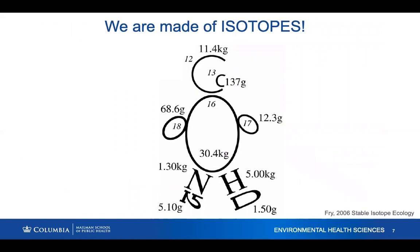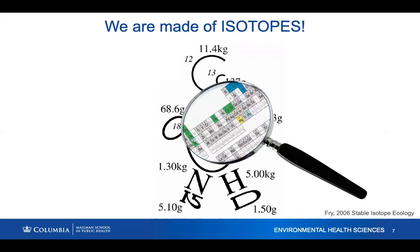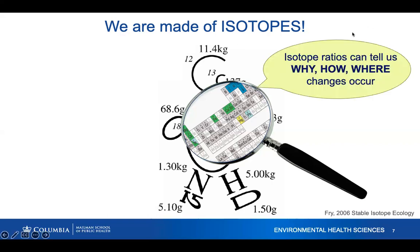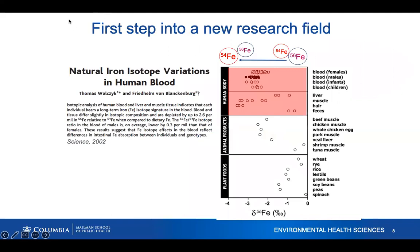Every object is defined by its elemental and isotopic composition — whether it's a rock, water, or a human. We are made of isotopes of the major elements: carbon, oxygen, nitrogen, sulfur, hydrogen. To a smaller extent we also contain all other elements — essential metals like copper, zinc, iron, calcium, magnesium — but also toxic metals like mercury, lead, and antimony. These are incorporated in our tissue and bones, and isotopes can help us understand where exposure comes from and what these metals do in our body.